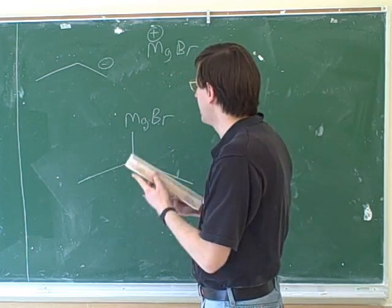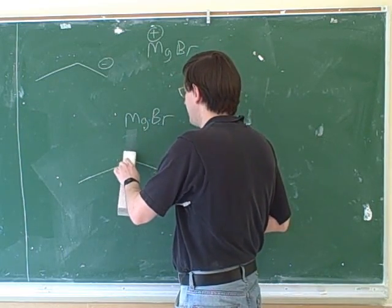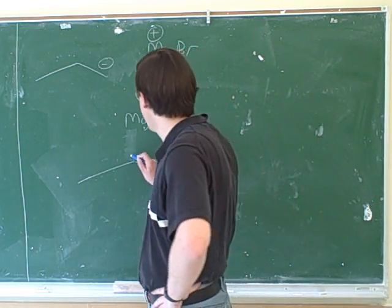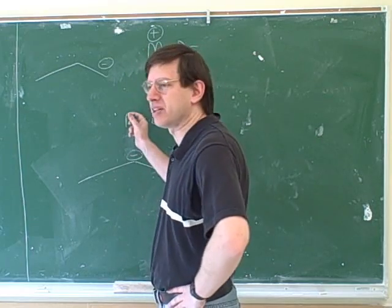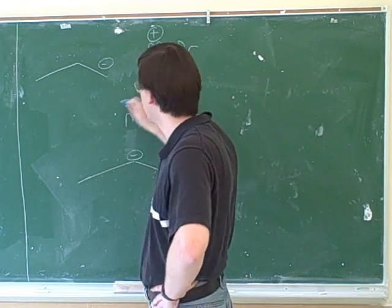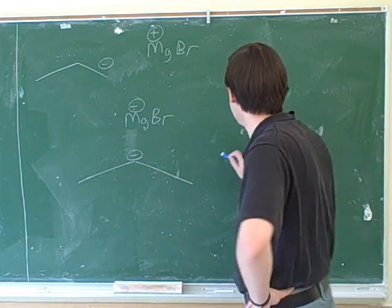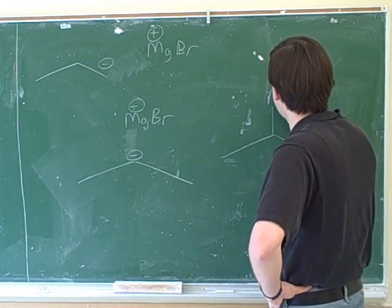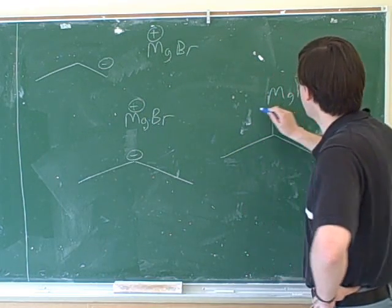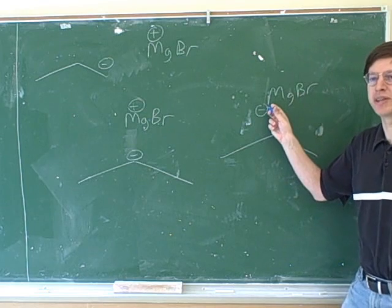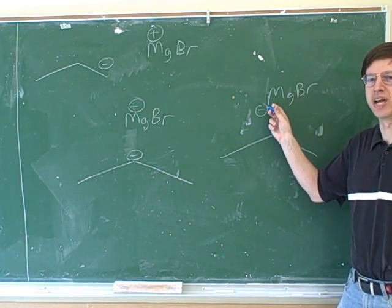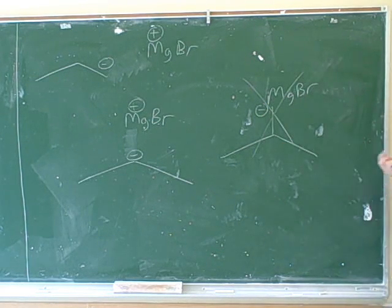So you guys both started by erasing the covalent bond and then we know the negative charge goes on the carbon, obviously not on the magnesium, and the positive charge goes on the magnesium over here. So you both avoided that common mistake. The common mistake would be to put a negative charge here, but there isn't really any carbon here, so we would never want to do that because that would be a big mistake.